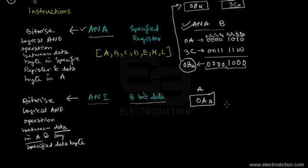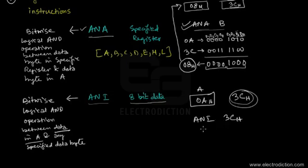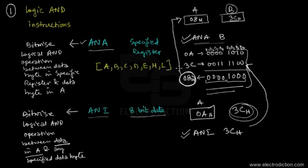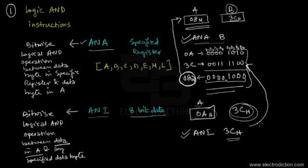To perform the same AND example using ANI: if the accumulator contains 0AH and we want to AND it with 3CH, we don't need to store 3CH in any register. Instead, we directly write ANI 3C, providing the 8-bit data directly. The same operation takes place and the same result 08H gets stored in the accumulator.